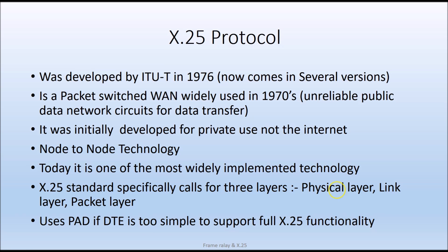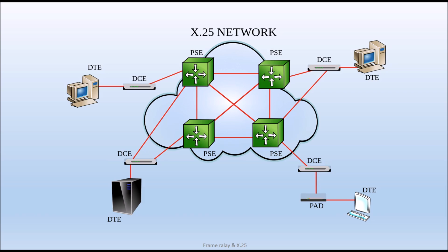X.25 operates in three layers: the physical layer, the data link layer, and the network layer. We have the PAD, which is a Packet Assembler and Disassembler. The network is set up with the DCE and the DTE. The DCE is the data circuit, meaning your modem, and the DTE can be a computer, protocol converter, terminal, or a router.